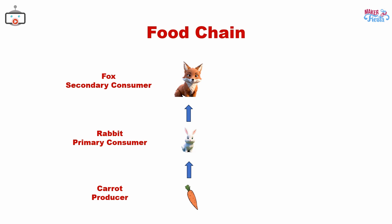In a food chain, organisms are classified into three main categories: producers, consumers, and decomposers.